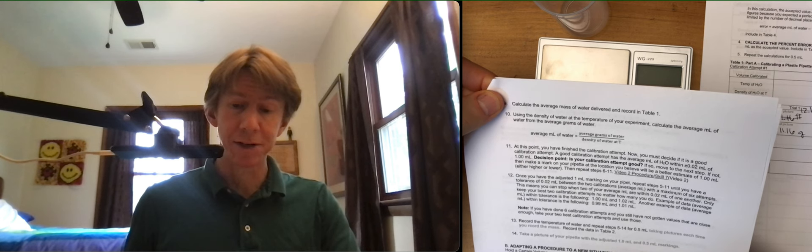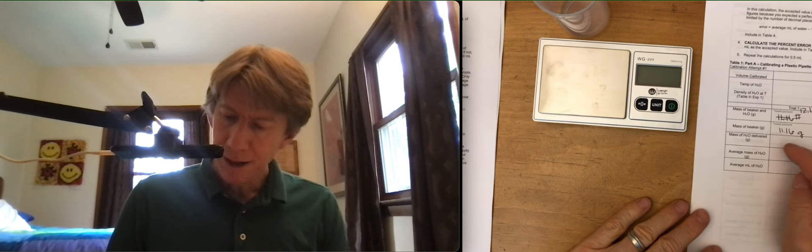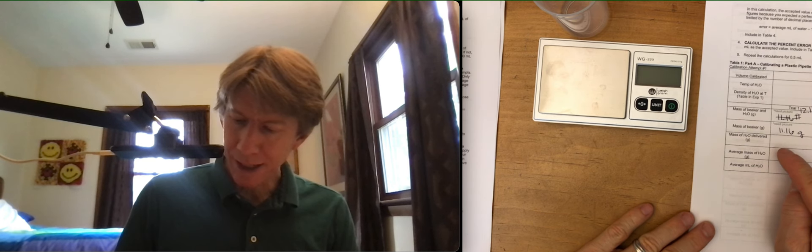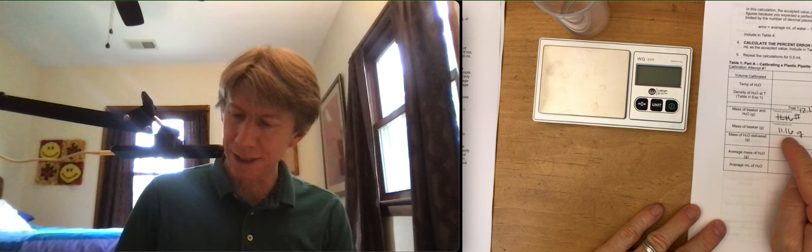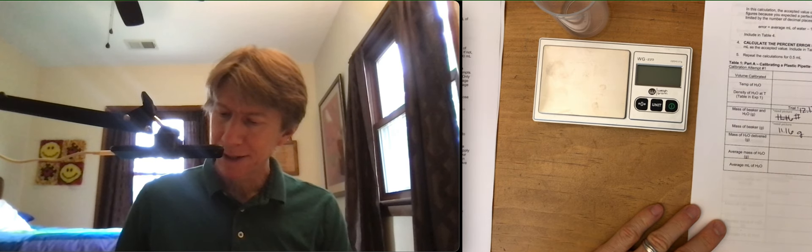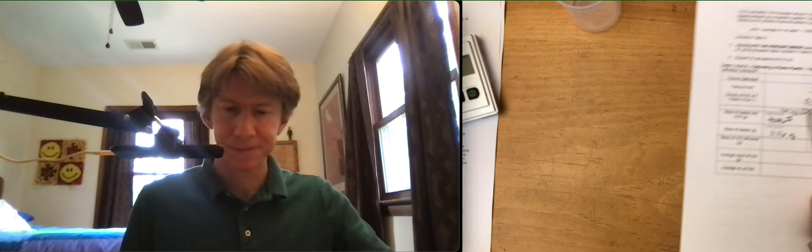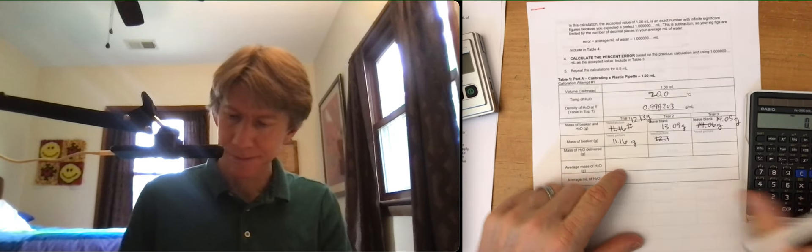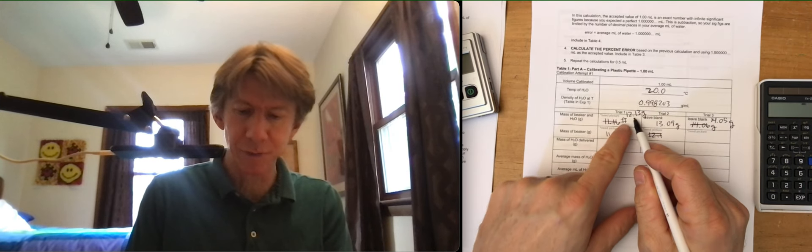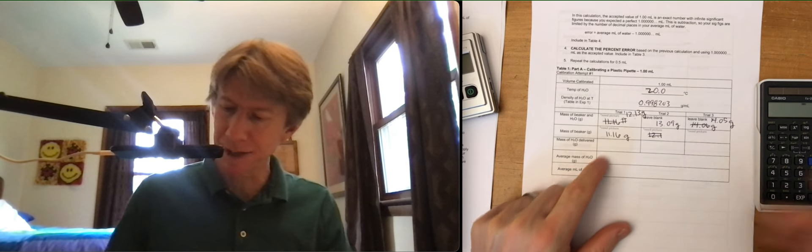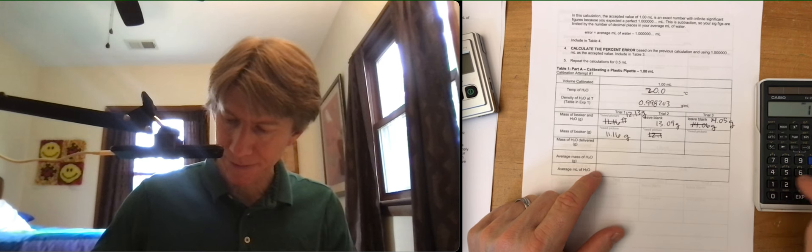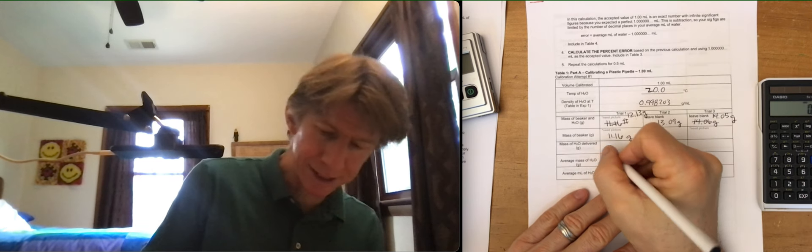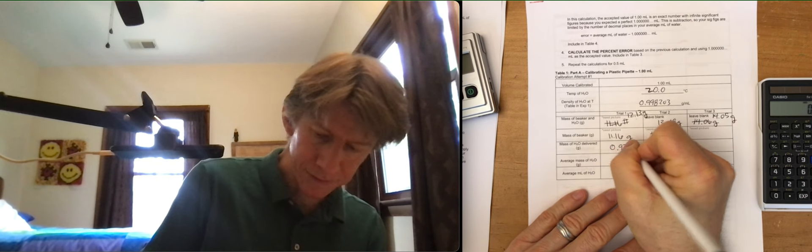Next is calculate the average mass of water delivered and record in table one. Remember, yes. So I'm going to get my three masses. I'm going to take and subtract. Let's see. So it's going to be 11.16, sorry, yes, 12.13 minus 11.16, 0.97 grams.